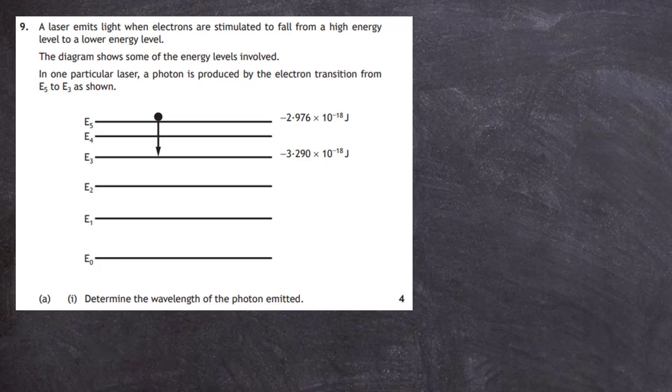In one particular laser, a photon is produced by the electron transition from E5 to E3 as shown. For four marks, we're asked to determine the wavelength of the photon emitted. When the electron moves from one level down to another level, it gives off a photon. That photon has energy E, and the value of that energy is exactly equal to the energy gap between the two energy levels, delta E.